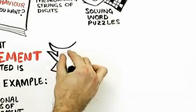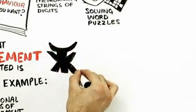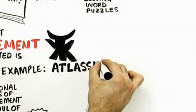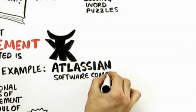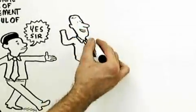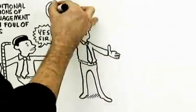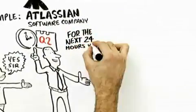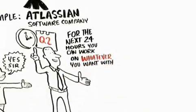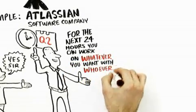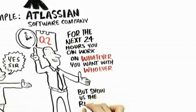Let me give you some examples of almost radical forms of self-direction in the workplace that lead to good results. Let's start with this company, Atlassian, an Australian software company. They do something really cool. Once a quarter, on a Thursday afternoon, they say to their developers, 'For the next 24 hours you can work on anything you want. You can work on it the way you want. You can work on it with whomever you want.'